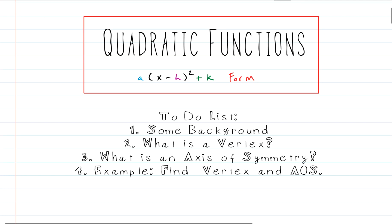Hey everyone, it's Bradley Bush with another algebra video. Today we're talking about quadratic functions, specifically quadratic functions of the form a times (x minus h) squared plus k — vertex form, sometimes called standard form. Our to-do list: we'll cover some background, talk about what a vertex is, what an axis of symmetry is, and then do an example finding a vertex and axis of symmetry.